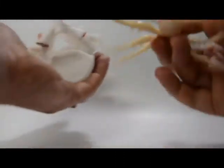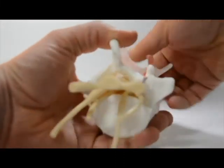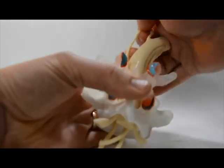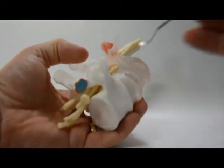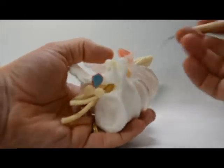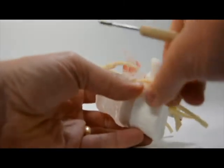To return the nerves to the model, simply push in a cephalad direction up through the spinal canal while pulling the nerve roots into position. A small tool can be used to help fish out the nerve roots into the respective IVFs.